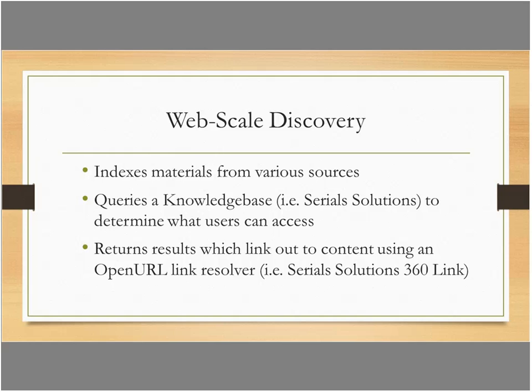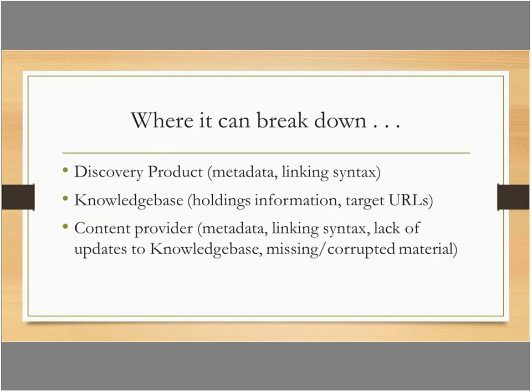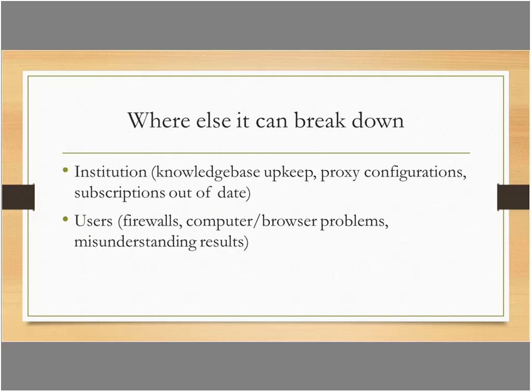As we all know, technology doesn't always work the way we'd like. There are certain places where the web-scale discovery process can break down. It can break down on the provider side: the discovery product itself can have incorrect metadata or problems with the open URL linking syntax. The knowledge base can have problems too—sometimes holdings information isn't correct, or URLs haven't been updated after changes. Content providers can have problems as well: metadata issues, linking syntax, a lack of updates to the knowledge base, and missing or corrupted full-text materials.